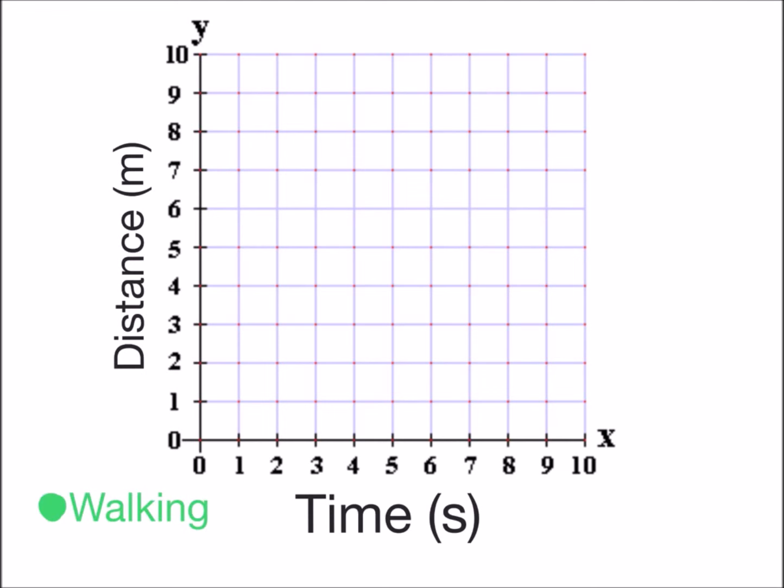What we're going to do first is look at the information from somebody walking which is in green by our legend. We're going to increase the distance by 0.5 meters per second and we're going to compare that to somebody jogging where their distance will increase by 2 meters per second.